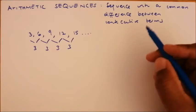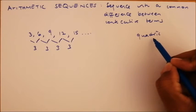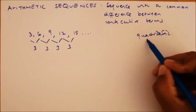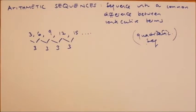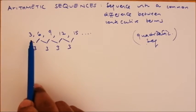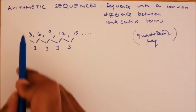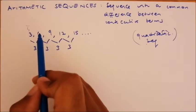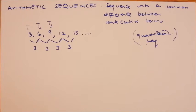Take note: we have learned about quadratic sequences, which have a common second difference. However, arithmetic sequences have a common first difference. That is how you show whether a sequence is arithmetic. In the sequence 3, 6, 9, 12 — these are called terms. So 3 is term 1, 6 is term 2, 9 is term 3.